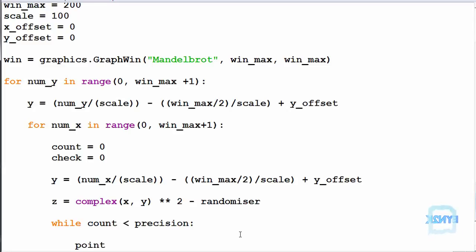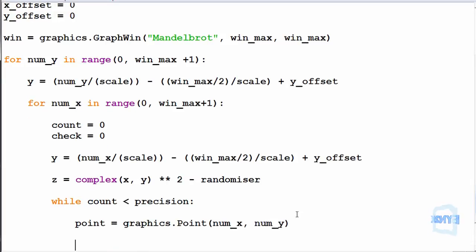So now we need to create a point such as point equals graphics.point. And in here we can make num_x the first point since we need to iterate over the X first, then num_y. And we're simply going to color this point according to how this iterates. So now we're simply going to iterate over Z. So Z equals Z to the power of 2, take C. So now as we get a new value for Z, we'll input it and assign it to the new Z, iterating it and growing it or reducing it every time.